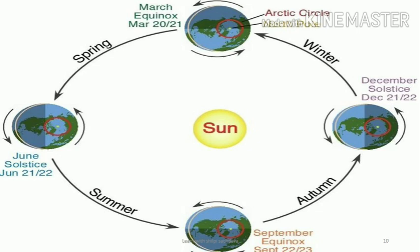Before moving further, you have to see that there are four different positions of the Earth's sphere. All four positions show a red circle which indicates the Arctic Circle, and there is a white dot marked inside the Arctic Circle which is the North Pole. We have to consider the North Pole to understand the Solstice as well as the Equinox.